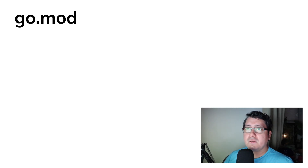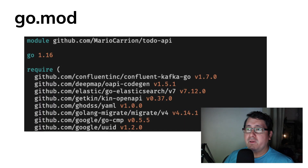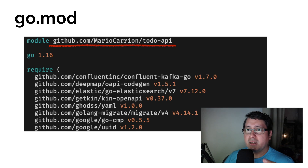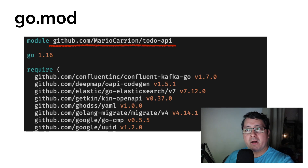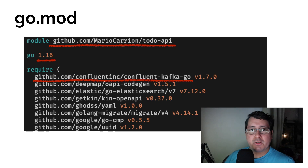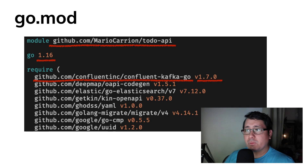How does this look in real life? If we use the ToDo microservice Go module from previous videos, you'll notice there is the module name which is github.com/MarioKarian/todo-api, a Go version of 1.16, and a bunch of require instructions indicating the packages we depend on as well as the versions being used.